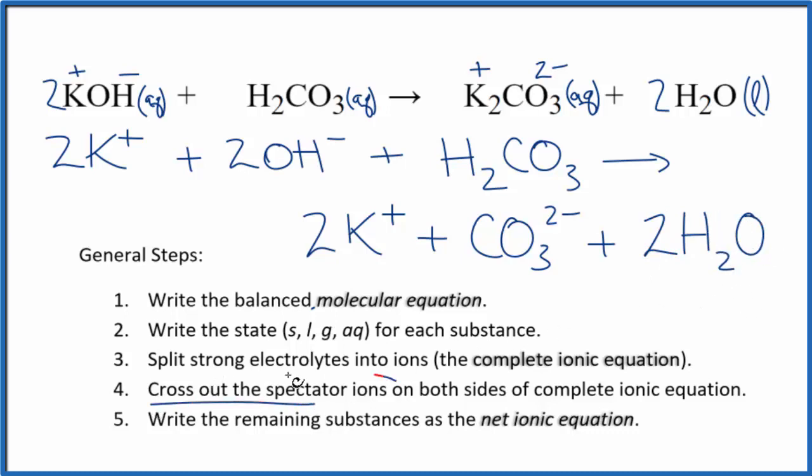Now we can cross out spectator ions. They're on both sides of that complete ionic equation. I'm looking for something that's the same in the reactants and the products. The only thing I see, we have two potassium ions here and two here. So we can get rid of those. Everything else is unique.